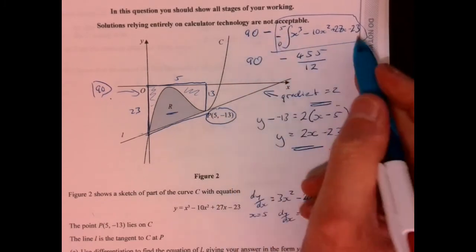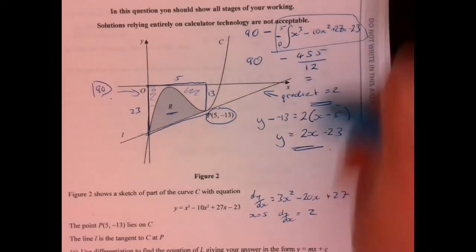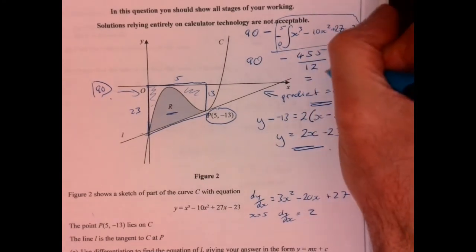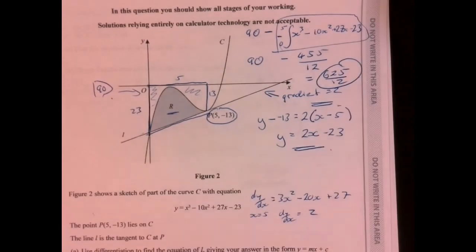So if you work that through, I know I feel like I missed a little stage there. You can work that bit out and check your answer there and then you should end up with 62 and 5/12.